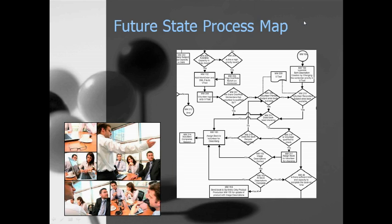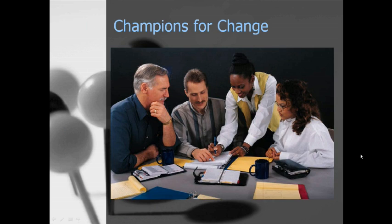Interestingly, those 15 people really took ownership of the entire future state process map. They saw it was going to solve their process problems and the company's problem of getting more product out the door to customers. They were so involved in wanting to get it done that we actually had competition between process owners about who was going to be on the implementation team. We ended up with some creative lotteries and self-selecting by the process owners, ultimately forming an implementation team of eight people plus the project leader and myself.